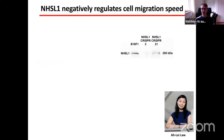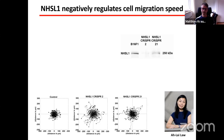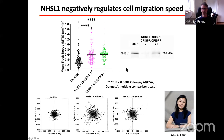We then set out to characterize the function of NHS-like 1 in cell migration. We generated CRISPR knockout cell lines using B16F1 melanoma cells with the nickase approach to reduce off-target effects, and knocked a stop codon into exon 2. The NHS-like 1 CRISPR-2 cell line represents a full knockout. When we analyzed random cell migration on fibronectin, we observed that NHS-like 1 knockout cells had longer cell tracks and significantly increased migration speeds, suggesting that NHS-like 1 negatively regulates migration speed.